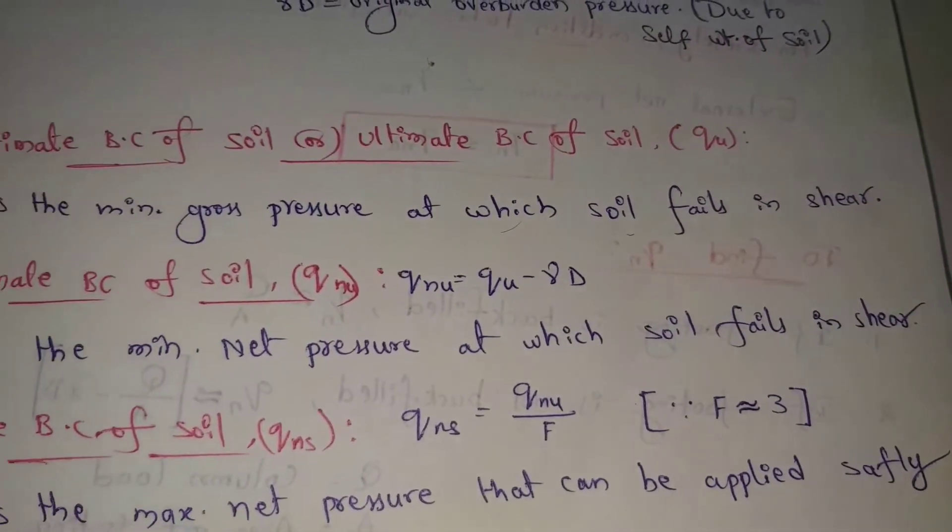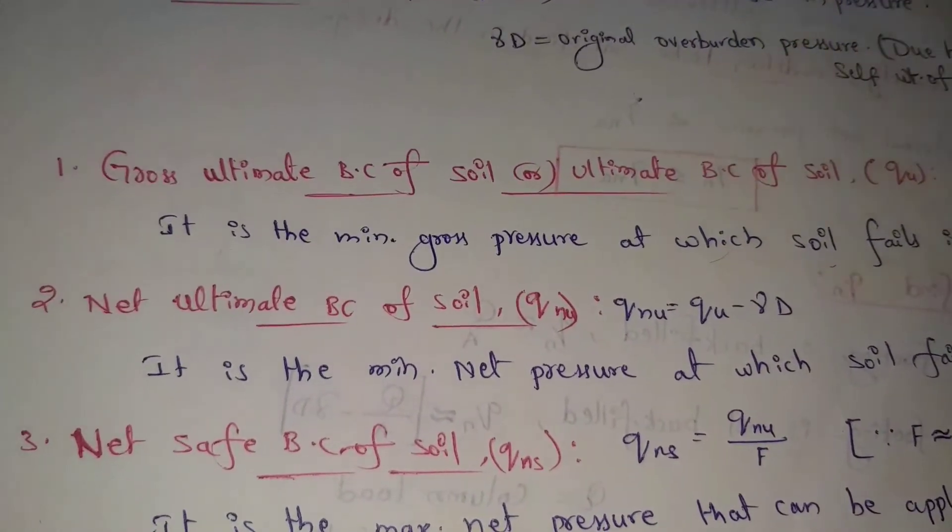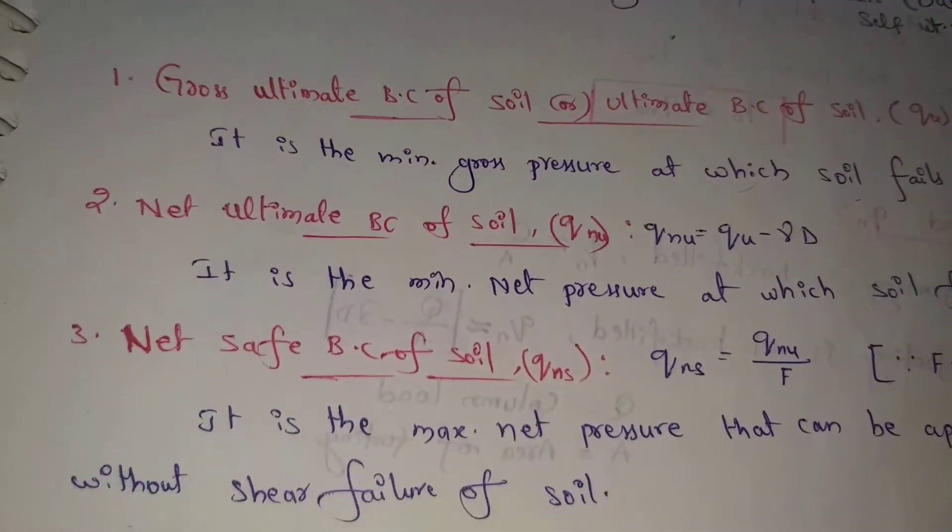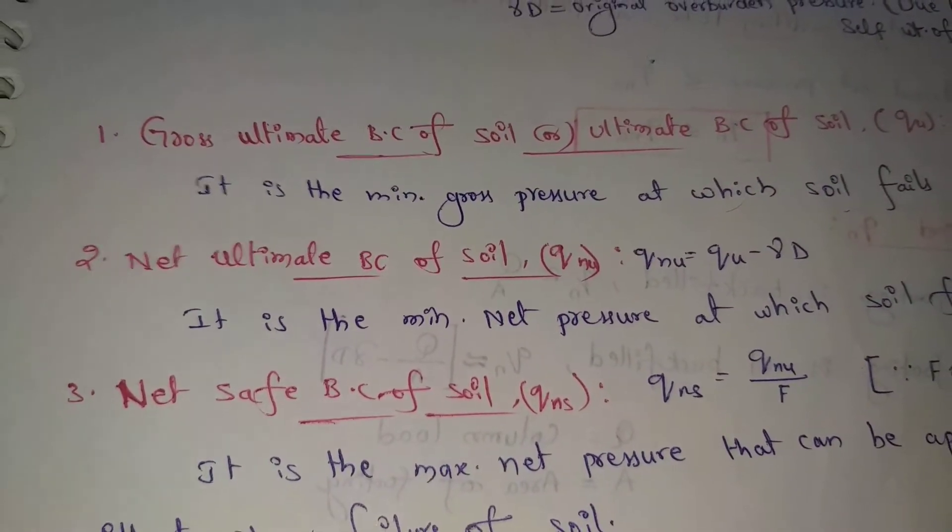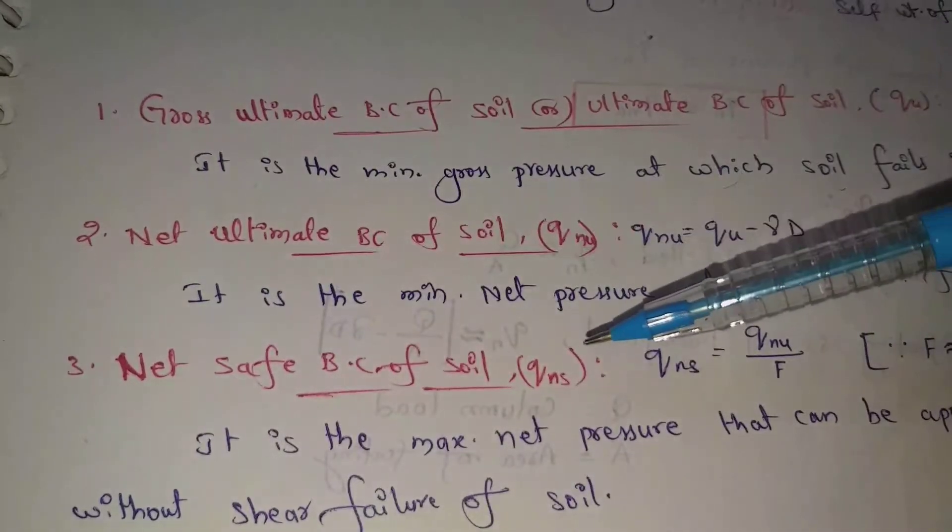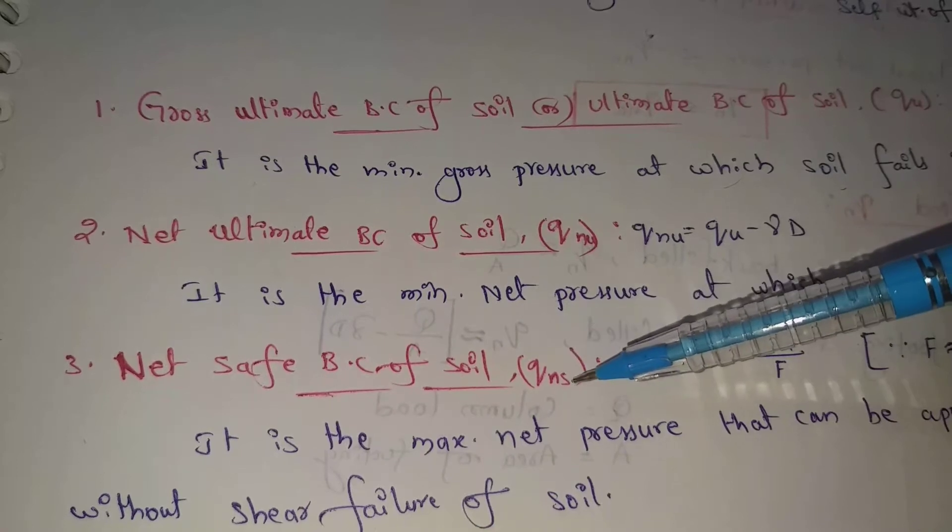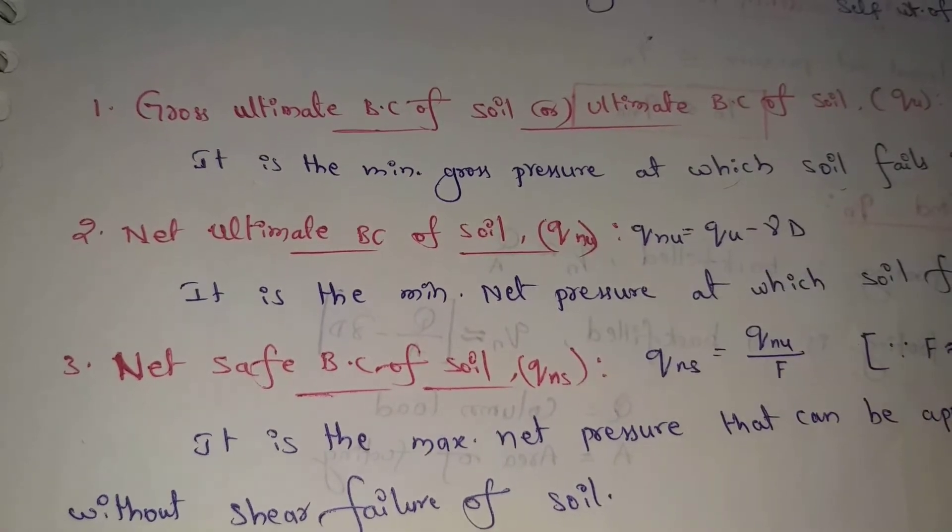It is the minimum net pressure at which soil fails in shear. Next, net safe bearing capacity of soil.